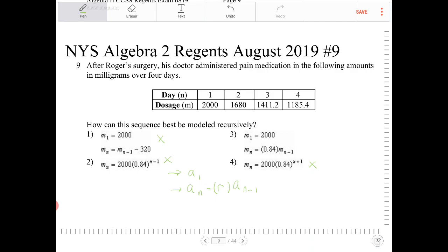And if you look at this, m sub 1, which is our first term, that's the dosage on the first day, which matches with the data.